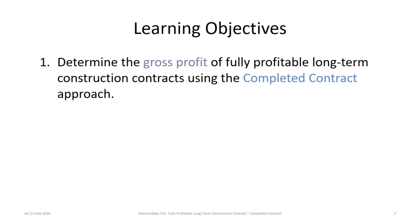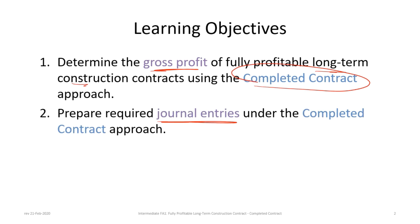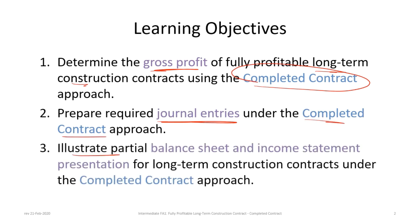There are three basic learning objectives for this tutorial. The first is to determine the gross profit of a fully profitable long-term construction contract using the completed contract approach. Second, to prepare the required journal entries under the completed contract approach. And third, to show what a partial balance sheet and income statement presentation would look like for long-term construction projects under the completed contract approach.